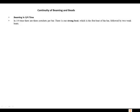In 3/4 time there are three crotchets per bar. There is one strong beat, which is the first beat of the bar, followed by two weak beats. The quavers can be beamed right across two or three whole crotchet beats, but the first note of the group must fall on the beat, not on an offbeat.